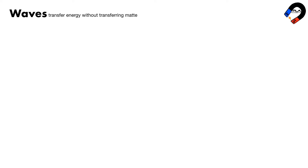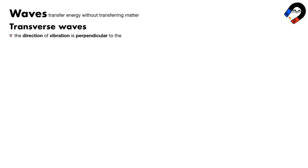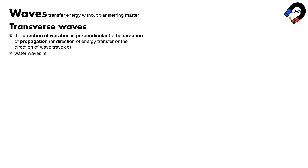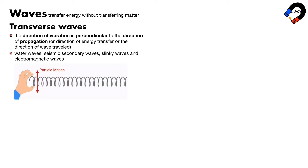Waves transfer energy without transferring matter. Waves are classified into two types: transverse waves and longitudinal waves. In transverse waves, the direction of vibration is perpendicular to the direction of propagation, direction of energy transfer, or direction of wave travel. Examples include water waves, seismic secondary waves, slinky waves, and electromagnetic waves.